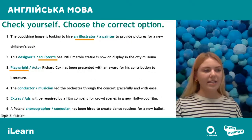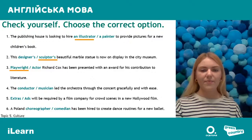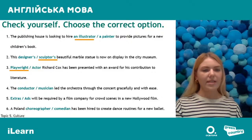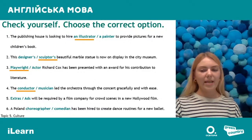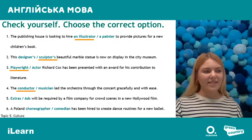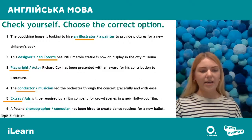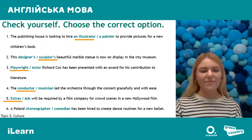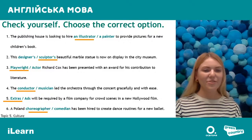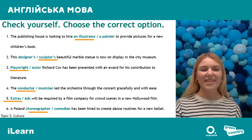Number four: this person 'led the orchestra through the concert' — that is a 'conductor' (диригент). Number five is about 'extras' — актори масовки. Number six: somebody has been hired to create dance routines for a new ballet — that is surely a 'choreographer', not a comedian. Pay attention to the spelling — it's a little bit tricky.